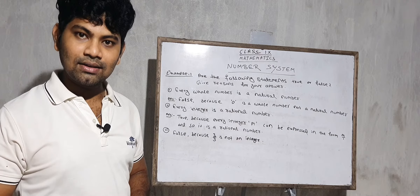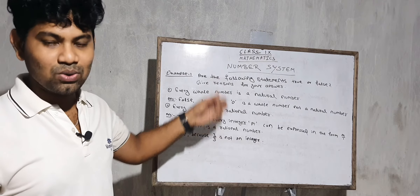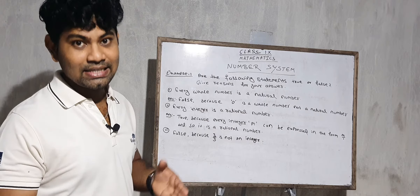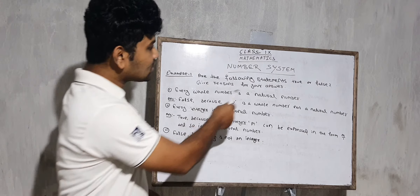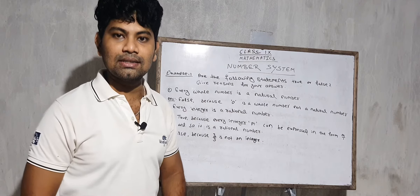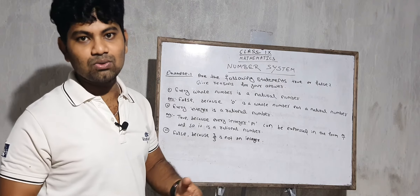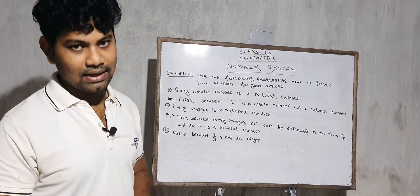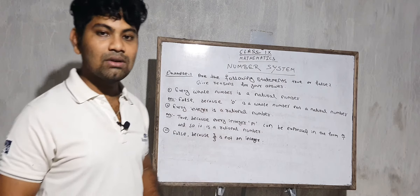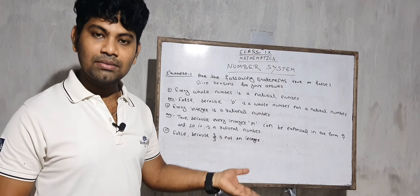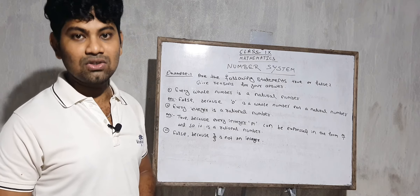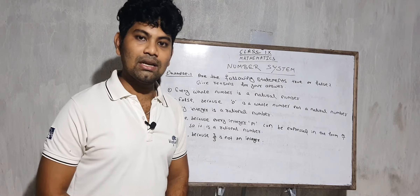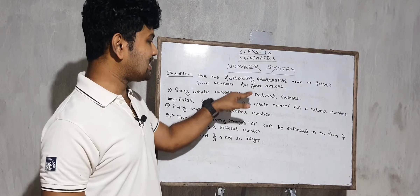Now let's discuss some question answers. We will look at some questions from your book. First: are the following statements true or false? Give reasons for your answer. Statement one: every whole number is a natural number.